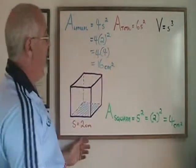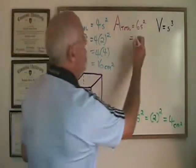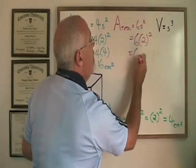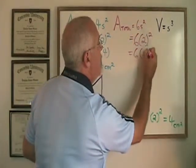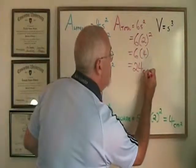So to fill in this formula, the side length is still 2 centimeters. We have 6 times 2 squared. 2 squared is 4, so we have 6 times 4. And our total area of this cube is 24 centimeters squared.